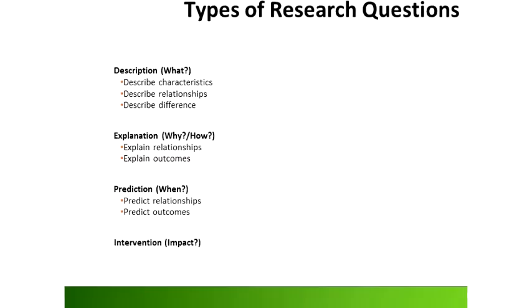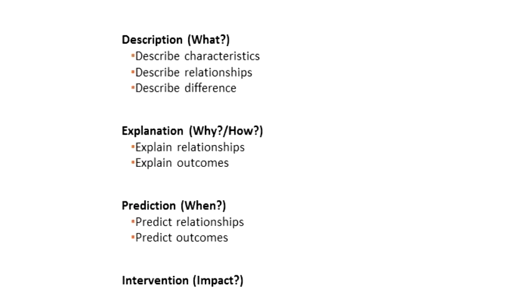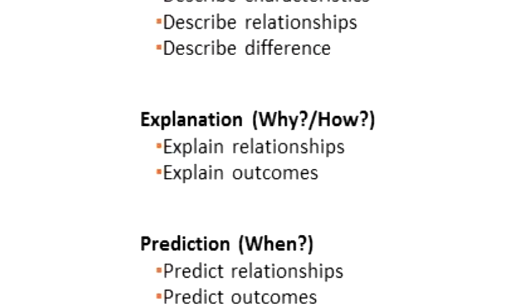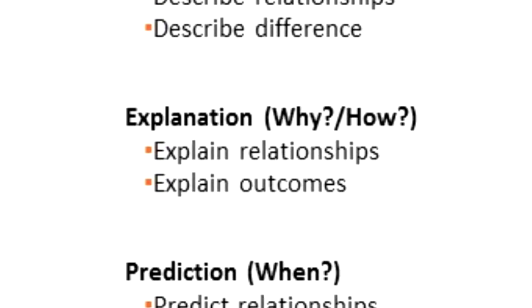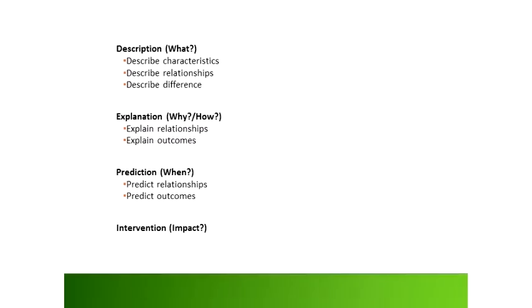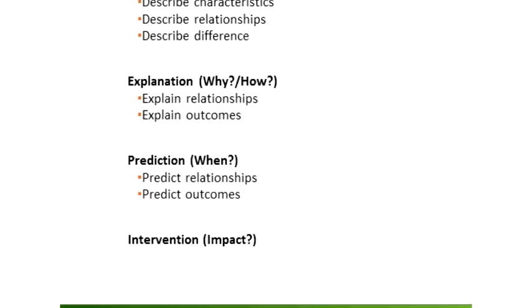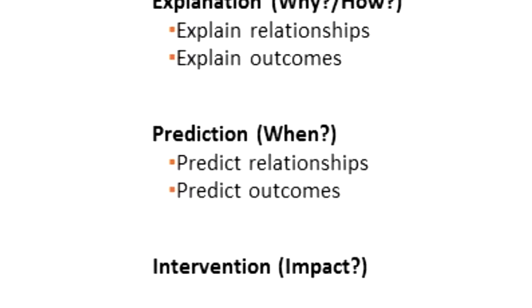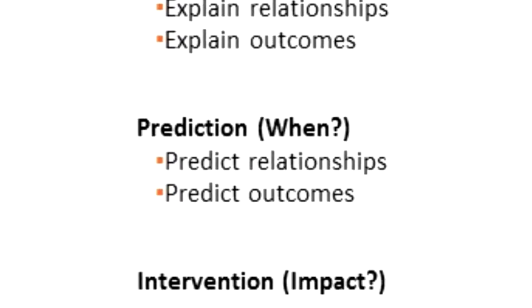Research questions that are descriptive in nature try to answer the question: what is happening? If you have a research question that is explanatory in nature, then you try to answer questions related to why something is happening. For example, you would like to know why certain variables predict an employee's levels of job satisfaction. The third aim of research deals with prediction.